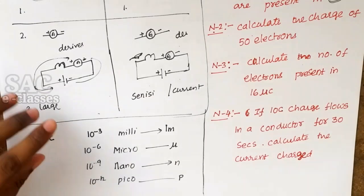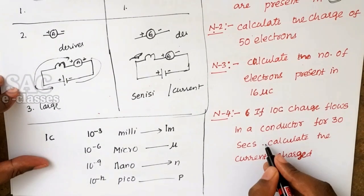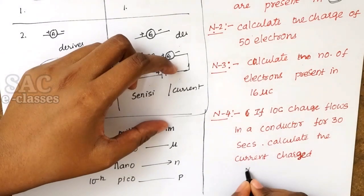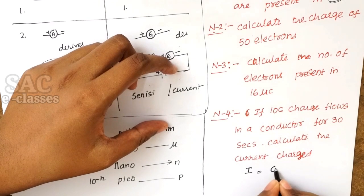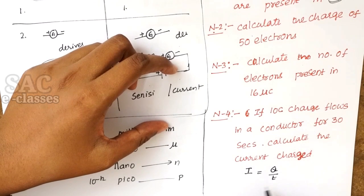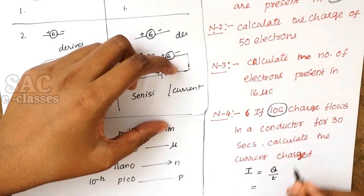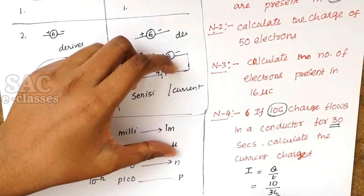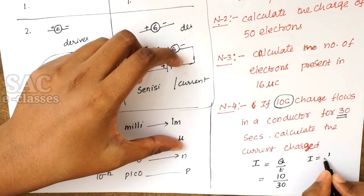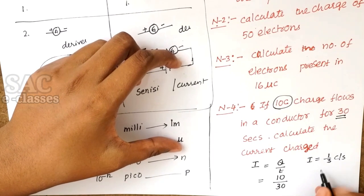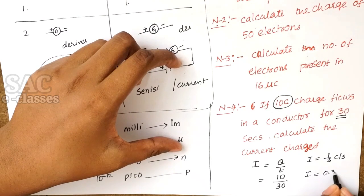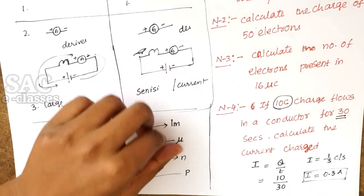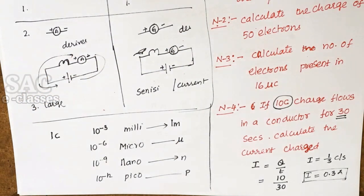Numerical 4: If 10 coulombs of charge flows through a conductor in 30 seconds, calculate the current. Using I = Q/T = 10/30 = 1/3 coulombs per second = 0.33 amperes.